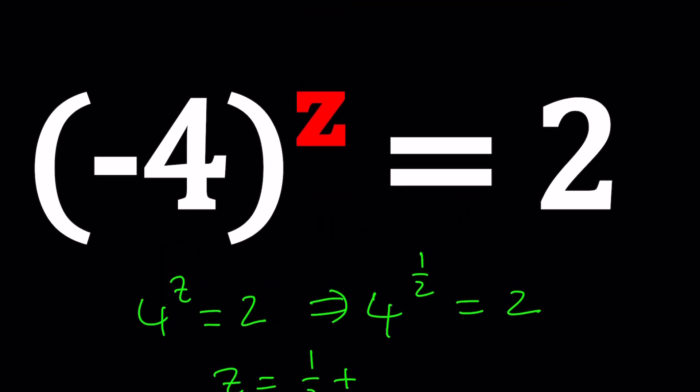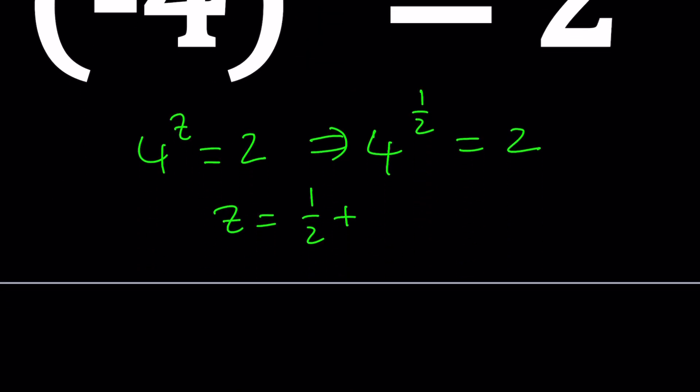So, negative 4 is the base. We have a negative base, so normally if you are working with real numbers and you have a negative base, if you raise it to a rational power, then you've got a problem. That's why exponential functions are not well defined for negative bases. Most of the time we require the base to be positive. But if z is an integer, then we're good because we can evaluate the power.